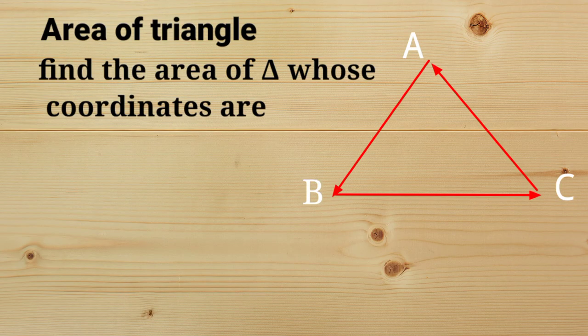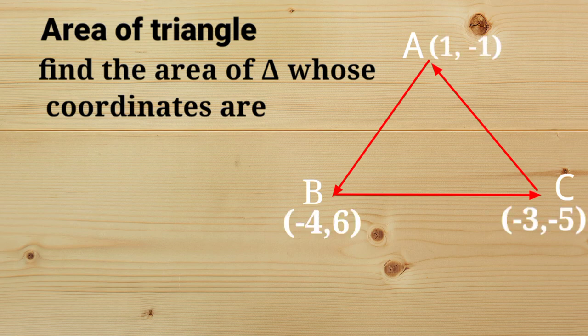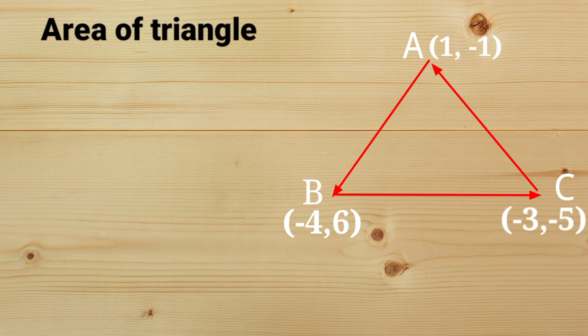Find the area of a triangle whose vertices are (1,-1), (-4,6), and (-3,-5).